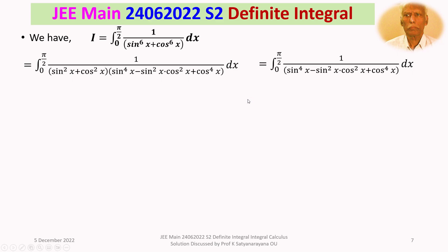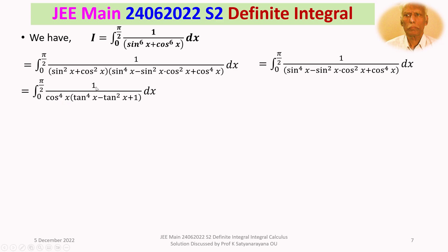To evaluate this, we take cos⁴x common from the denominator, giving the integral from 0 to π/2 of 1/cos⁴x divided by (tan⁴x − tan²x + 1) dx. Recognizing 1/cos⁴x = sec⁴x, we write sec⁴x = sec²x · sec²x = (1 + tan²x) · sec²x. So the integral becomes ∫₀^(π/2) (1 + tan²x) · sec²x / (tan⁴x − tan²x + 1) dx, converting everything in terms of tan x.